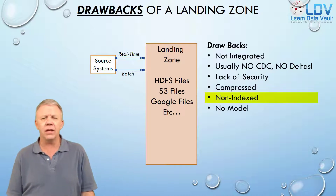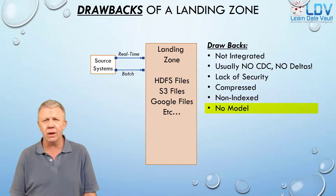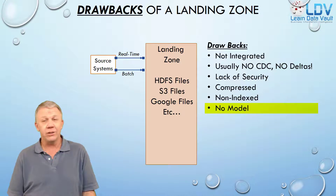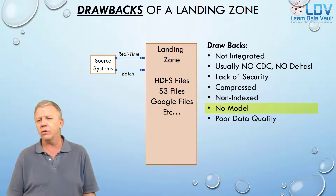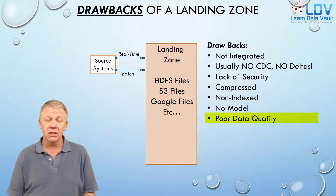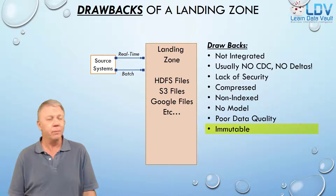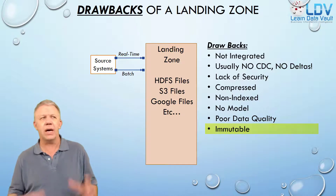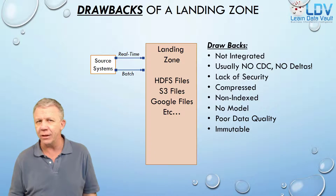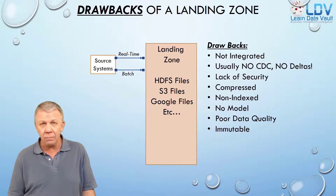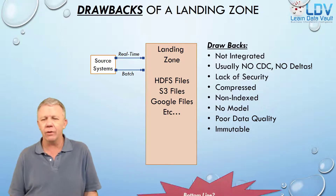It's non-indexed and has no data model whatsoever — it's just dumped in there with no definition. It generally has poor data quality unless you're executing data quality algorithms on the source system. It's also immutable, which means that you load files, those files sit there, and you don't update them. There's no real way to update a file in place — you have to replace the entire file.